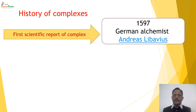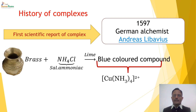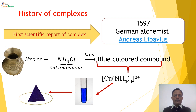The first ever scientific report on complexes was reported in 1597 by a German alchemist, Andres Libavius. He was carrying out experiments in a brass vessel using a solution of ammonium chloride — at that time known as sal ammoniac — in the presence of lime. He observed that the brass vessel in contact with these two compounds produced a blue coloured solution, which is basically the copper ammonia complex. On evaporation of solvent, it gives beautiful deep blue coloured crystals of the copper ammonia complex.